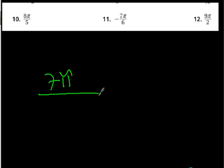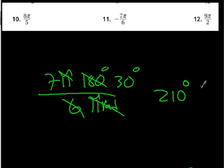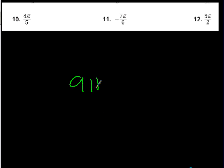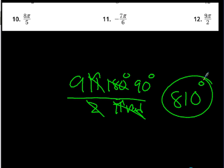Number 11: negative 7π/6 times 180 degrees over pi radians. 6 goes into 180 thirty times, and 7 times 30 is 210, so the answer is negative 210 degrees. Number 12: 9π/2 times 180 degrees over pi radians. 2 into 180 is 90 degrees, and 9 times 90 is 810 degrees.